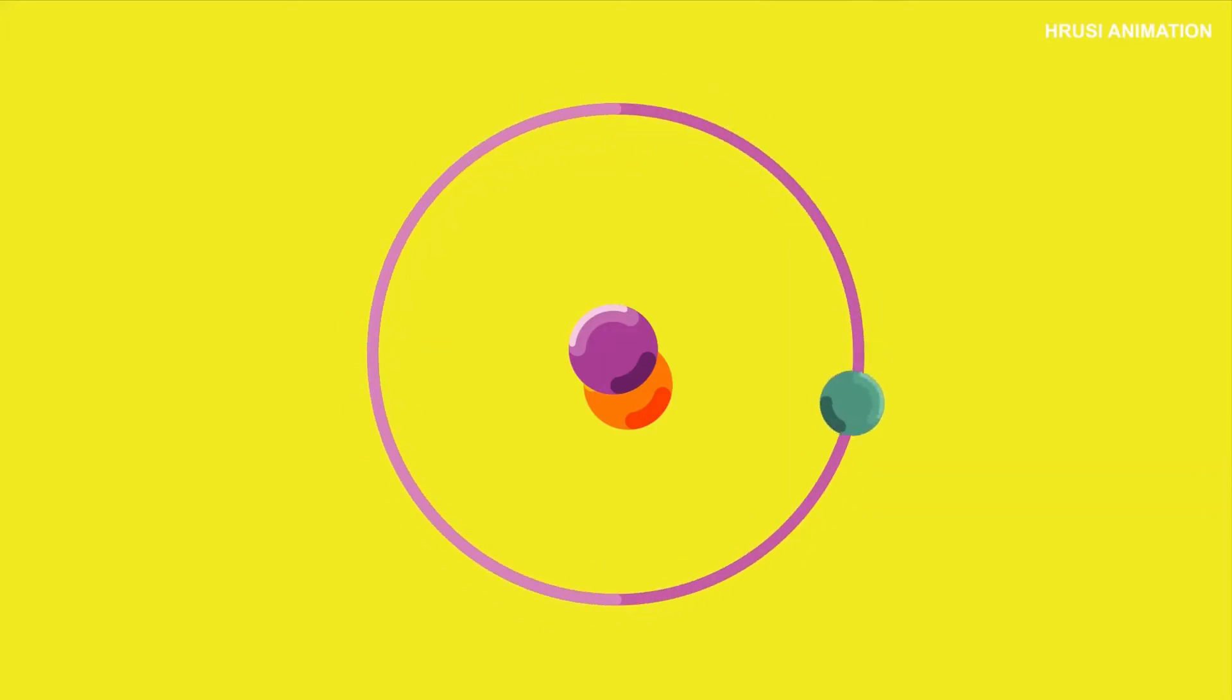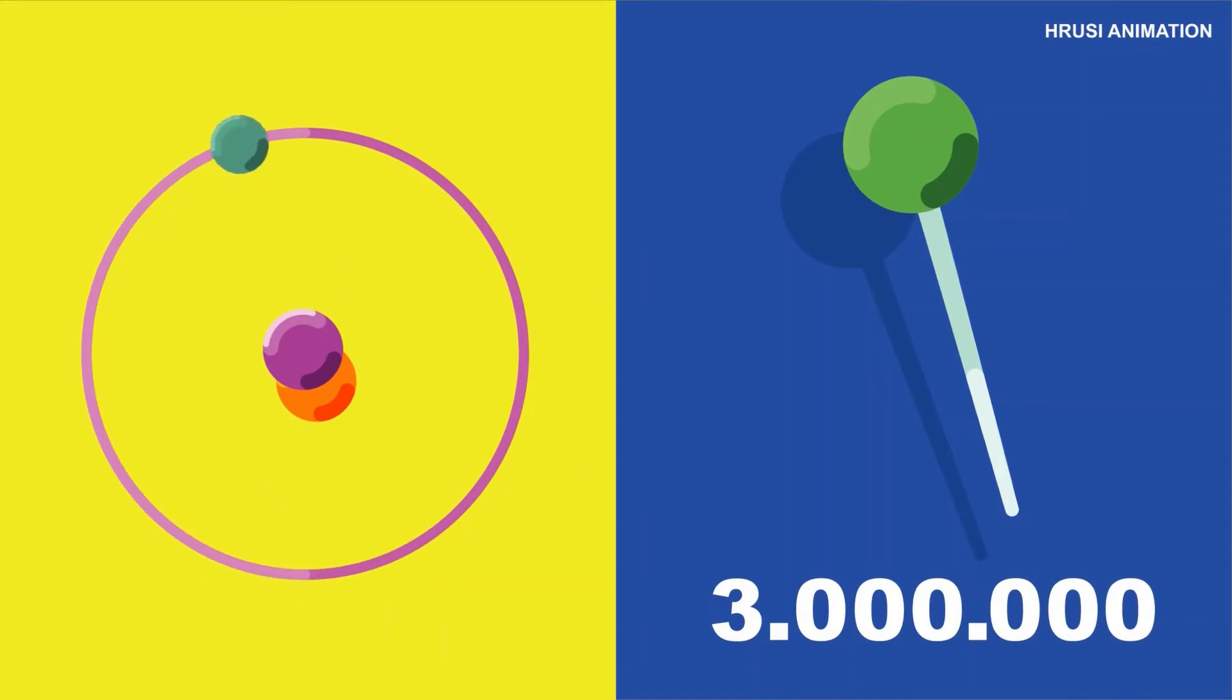Atoms are really small. A pin is as thick as three million atoms stacked on top of each other.